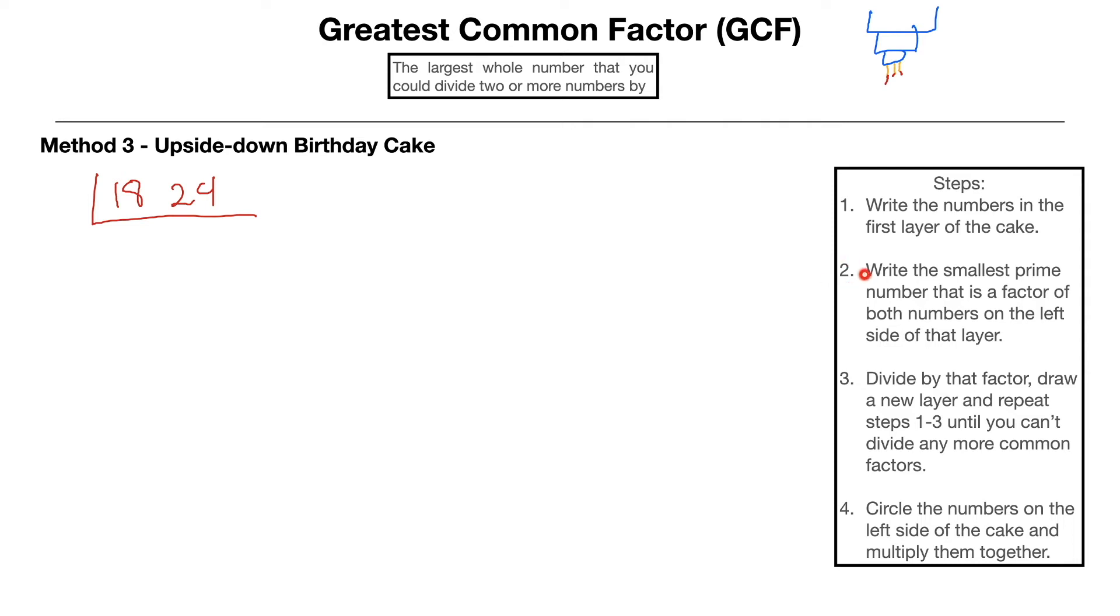Step 2: Write the smallest prime number that is a factor of both numbers on the left side of that layer. Prime numbers are numbers like 2, 3, 5, 7, 11—numbers that only have two factors, 1 and themselves. Both can be divided by 2, so I'm going to put 2 on the left-hand side.